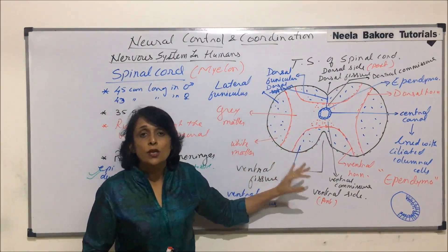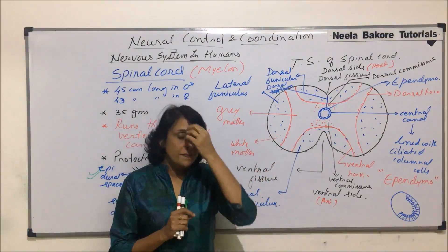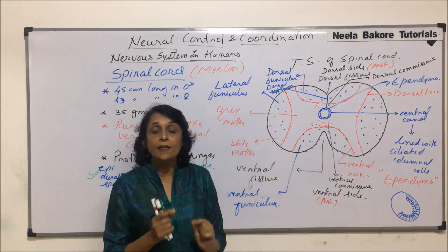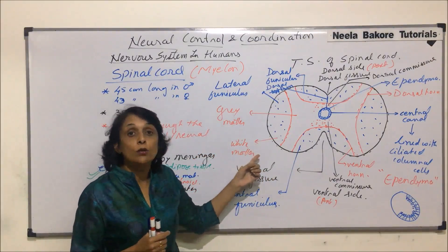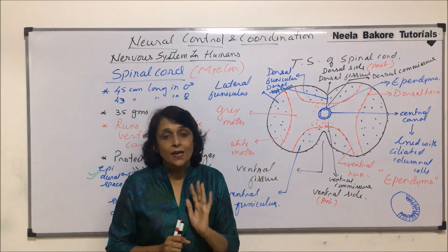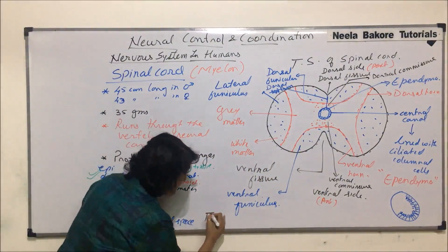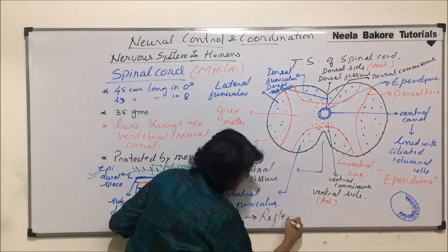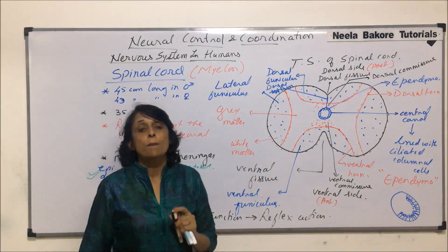After taking a section we realize it is the reverse in the brain. From the pons, medulla, and spinal cord, these are regions where gray matter is inner and white matter is outer. Whereas in the forebrain, midbrain, and cerebellum part of the hindbrain, it is gray matter which is outside and white matter which is inside. The function of the spinal cord is reflex action, and we will discuss the reflex arc path when we come to the peripheral nervous system.